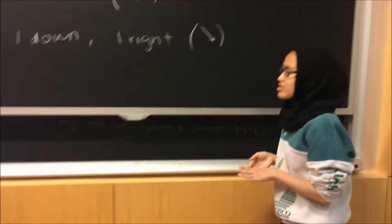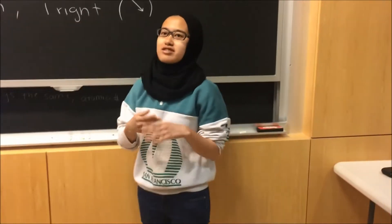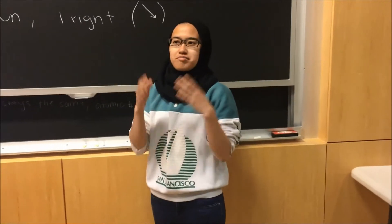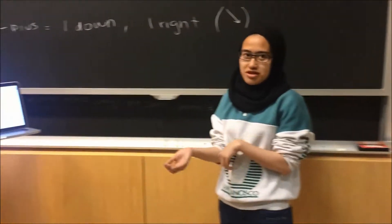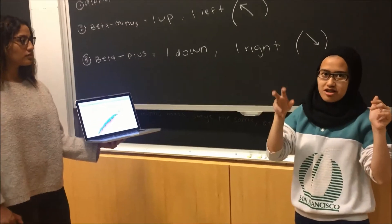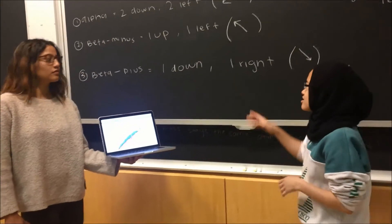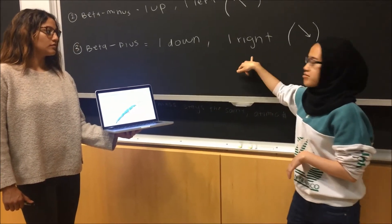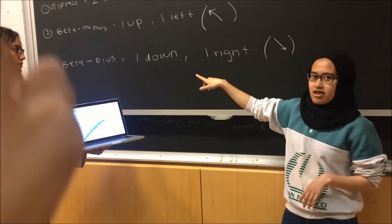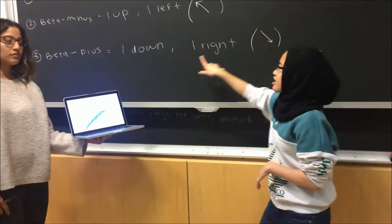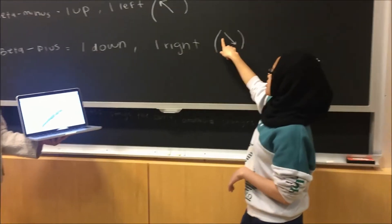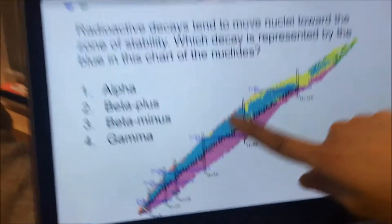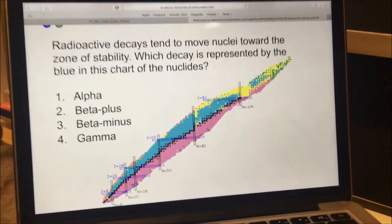The next one is beta plus. In beta plus, you're shooting out a positron, and then the proton becomes a neutron. So you lose a proton and gain a neutron — you go one down and one to the right, down-right. That's the blue region on the chart.